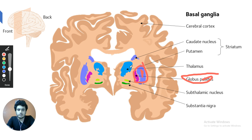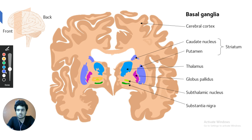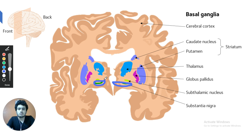Just lateral to the third ventricle is the thalamus, and just below the thalamus is the subthalamic nucleus, identified in yellow. Below the thalamus we can also find the substantia nigra, present just below the thalamus.